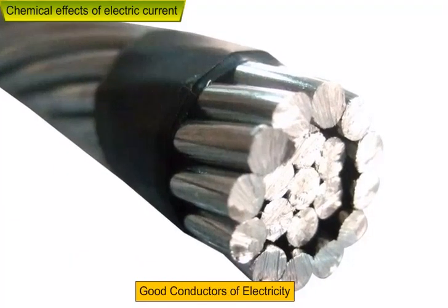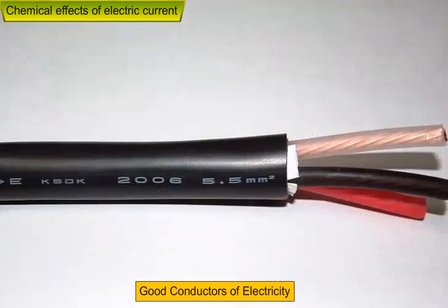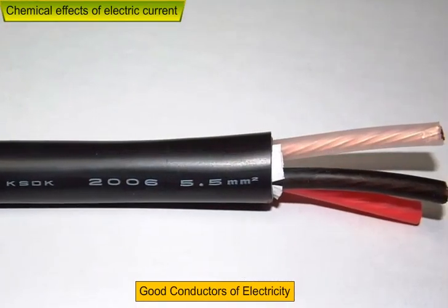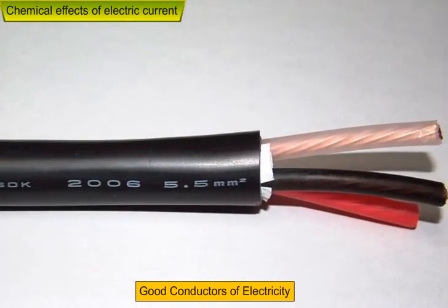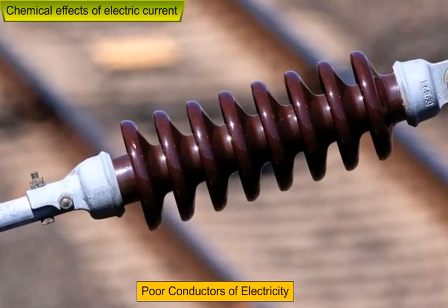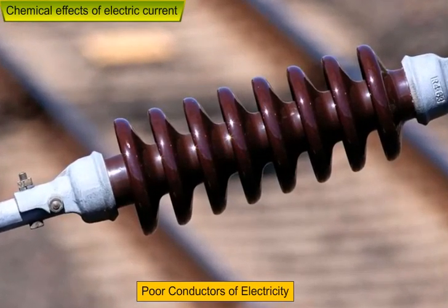The materials which allow electric current to pass through them are called good conductors of electricity. And the materials which do not allow electric current to pass through them easily are called poor conductors of electricity.